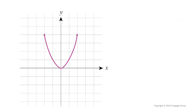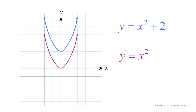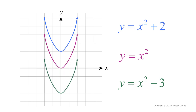For example, here's the graph of the parabola y equals x squared. The blue graph is the graph of y equals x squared plus 2, and this graph is shifted up 2 units. The green graph is the graph of y equals x squared minus 3, and this graph is shifted down 3 units.